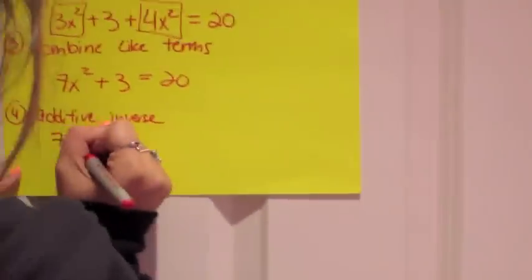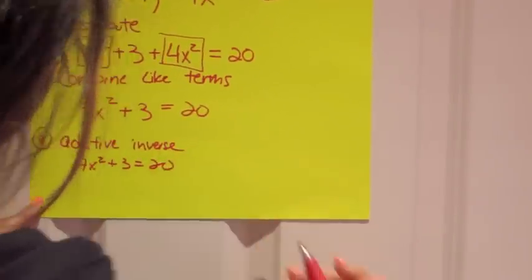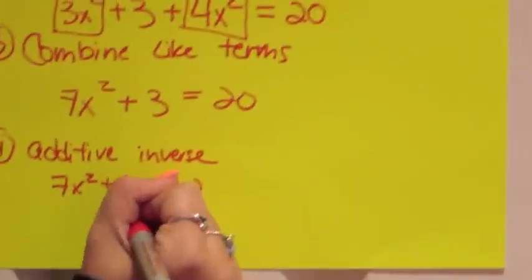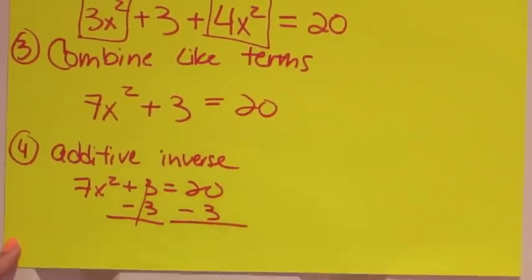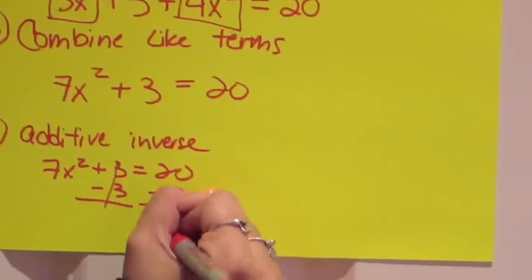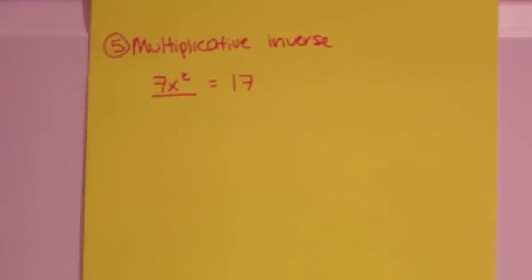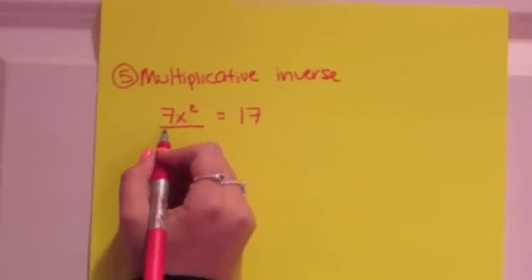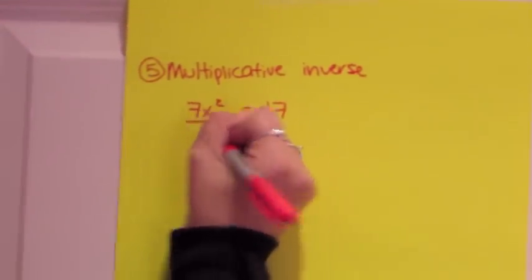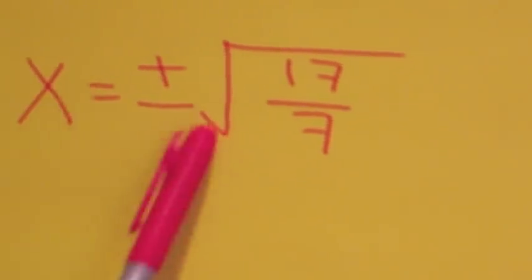You subtract 3 on both sides so this crosses out. Subtract 3 and this is 17. So now I'm doing the fifth step, which is multiplicative inverse. You divide both sides by 7. So x equals plus or minus radical 17 over 7.